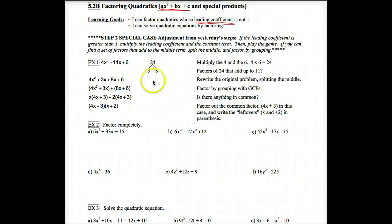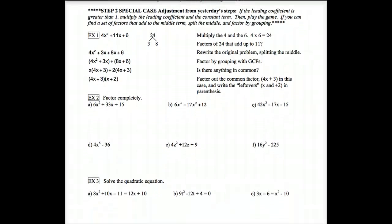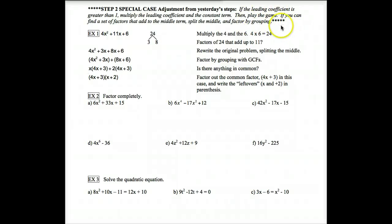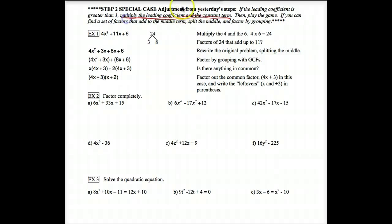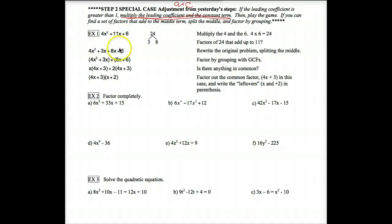So yesterday, most of what we did was the factors that add game. We have a special case adjustment on that factors that add game for when the leading coefficient is greater than 1. Yesterday, when we had x squared plus bx plus c, we said what multiplies to c and adds to b. Today, we are going to have to multiply the leading coefficient and the constant term — that's going to be your a times c — then you play the game. Instead of just saying what multiplies to the last term and adds to the middle, we say what multiplies to the first times the last term and adds to the middle.